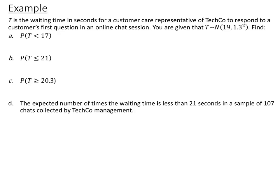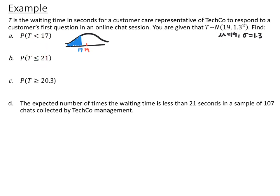Example: T is the waiting time in seconds for a customer care representative of TechCo to respond to a customer's first question in an online chat session. T is distributed normally with a mean of 19 and a standard deviation of 1.3. The first thing we always do for a normal distribution problem is draw a picture — a bell curve with the mean at 19. For part A, we want the probability that the time was less than 17 minutes, so we draw a bar at 17 and shade everything smaller.